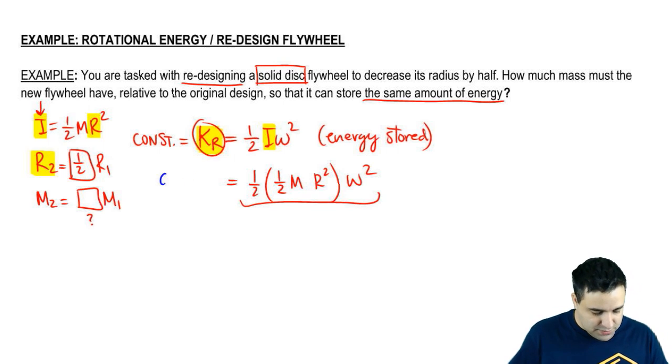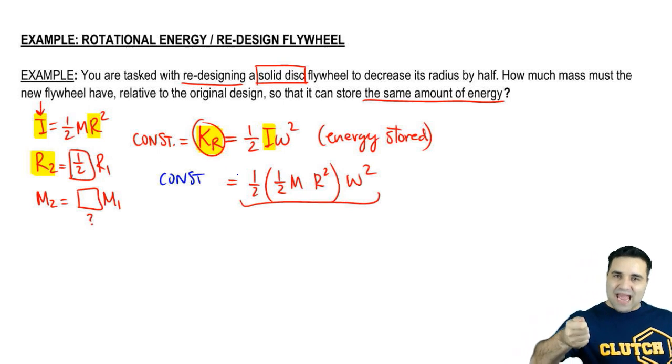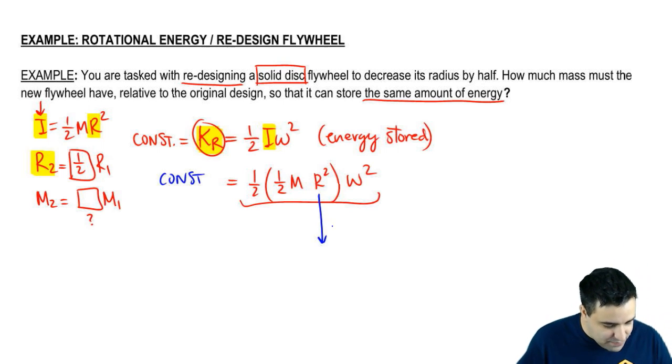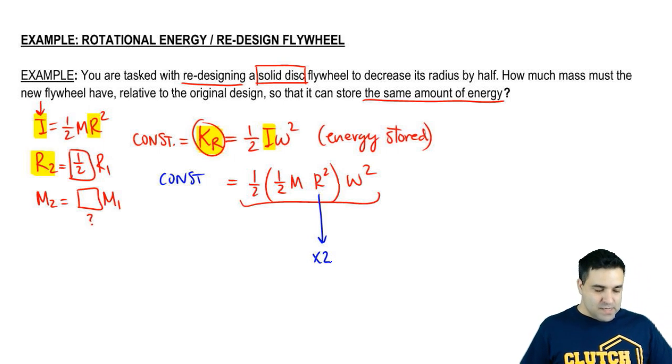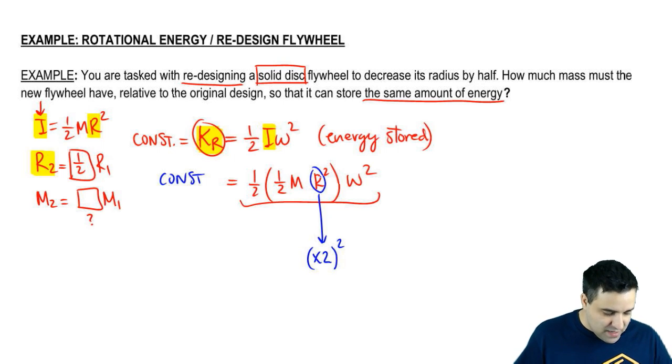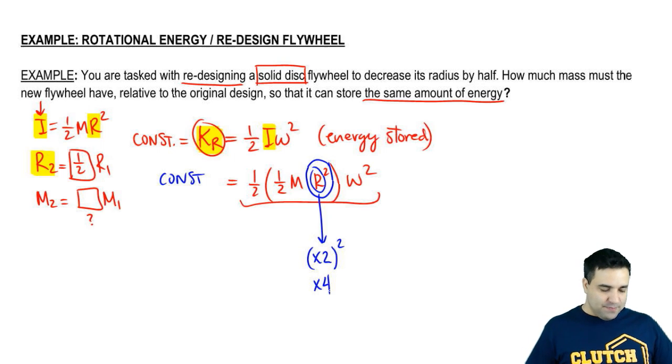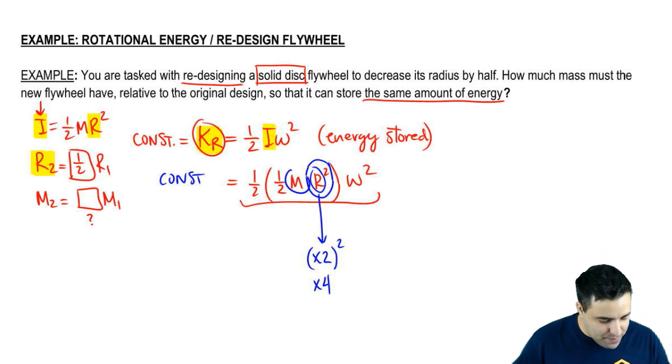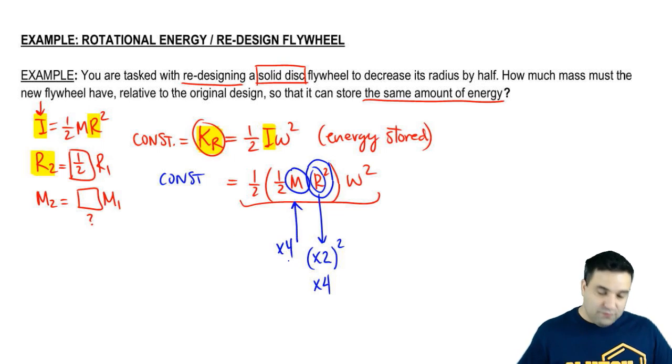So if my radius is becoming half as large, it means that it is decreasing by a factor of 2. But the R is squared, which means that when I reduce R by a factor of 2, I also have to square this. And R is becoming half as large, but then the whole thing, R squared, is becoming 4 times smaller. What that means is that if you want to keep everything constant, my mass has to grow by a factor of 4x. So my new mass has to be 4 times my old mass. And that's the answer.